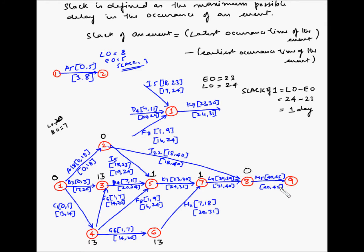For event 9, the latest occurrence is 45 and the earliest occurrence is also 45, so the slack is 0. An important observation is that activities A, J, and M are on the critical path for this project. For these critical activities, the earliest start and earliest finish times are the same as the latest start and latest finish times. The slack for all events on the critical path is 0, which makes sense because on the critical path you cannot afford to delay any activity or event — otherwise it would delay the entire project.